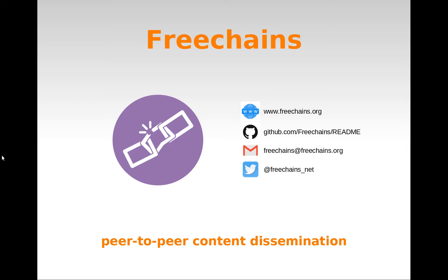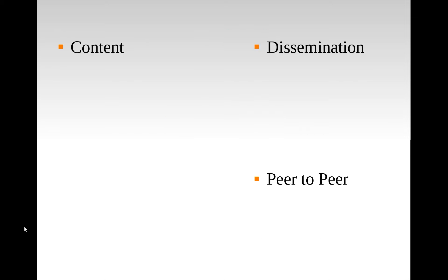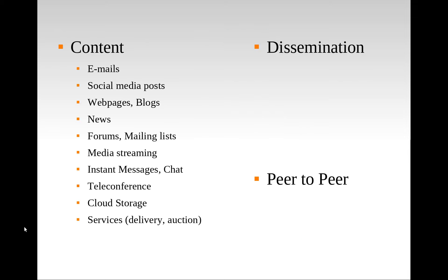FreeChains is a peer-to-peer content dissemination system. Content here refers to all kinds of information and interactions on the internet: email exchange, consuming news, social media interactions, and even making backups of documents, or using mobile apps, for example, to order food and taxi. This content needs to be disseminated between the participants somehow.